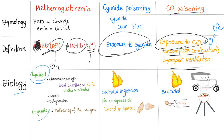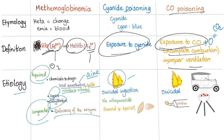Etiology of methemoglobinemia — acquired or congenital. Acquired causes include local anesthetics (anything ending in '-caine,' such as lidocaine), sulfa drugs, nitrites and nitrates, sepsis, and dehydration. Congenital causes include deficiency of the enzyme NADPH-dependent cytochrome B5 methemoglobin reductase. For cyanide poisoning: fires are the most common cause, suicide ingestion, sodium nitroprusside, and almonds or apricots if consumed in very large quantities.